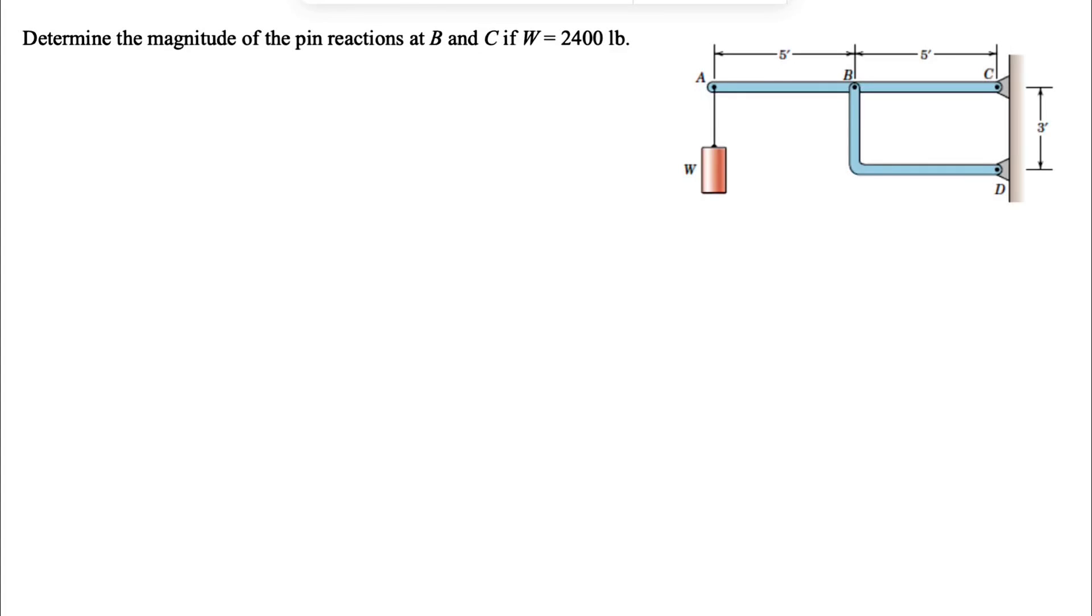All right guys, we're going to be solving another question from the fourth chapter of the Merriam textbook, Engineering Mechanics. In this one, we need to determine the magnitude of the pin reactions at point B and C, knowing that the weight of this cylinder is 2,400 pounds.